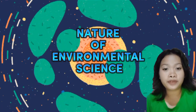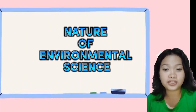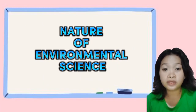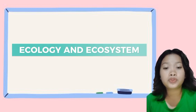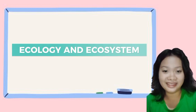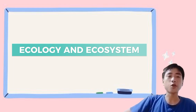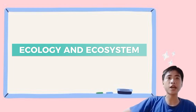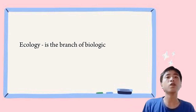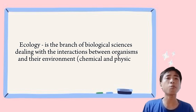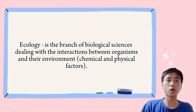Now that we have learned what is environmental science and its 12 major challenges, we will now proceed to the next topic: ecology and ecosystem, which will be discussed by Mr. Adlin. Thank you, Ms. Coquilla. My first topic is ecology and ecosystem. Let me discuss first ecology. Ecology is the study of how living things interact with each other and their environment.